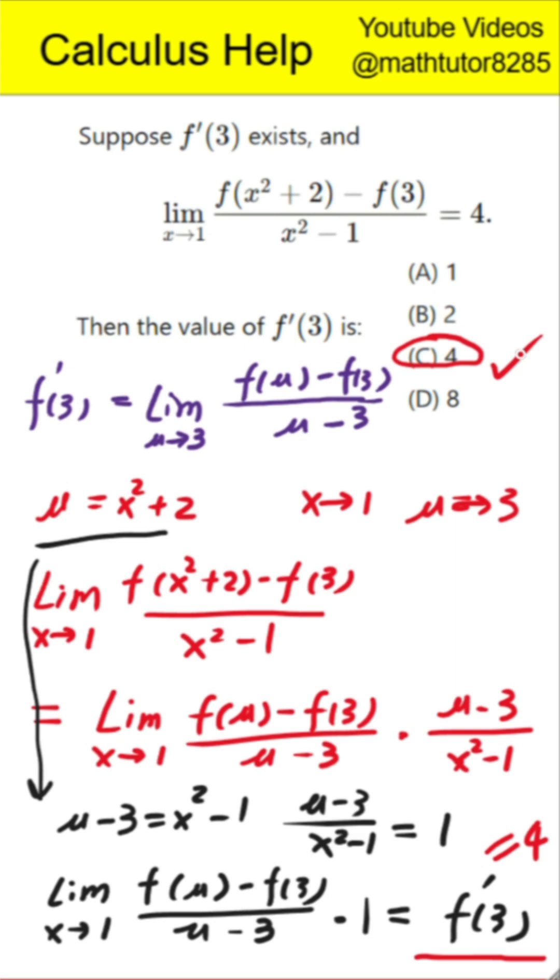Final answer: The correct choice is option C, which is 4. Common mistake: Many students forget to check the substitution carefully and instead try to apply L'Hôpital's rule unnecessarily. Tip: Always try to rewrite the limit so it directly matches the definition of a derivative.